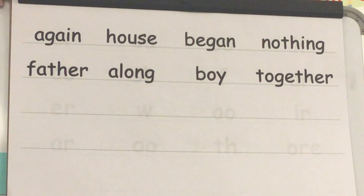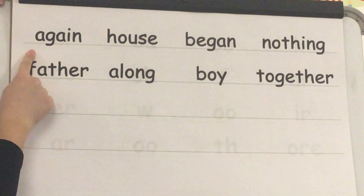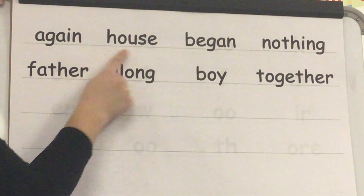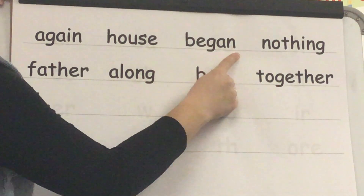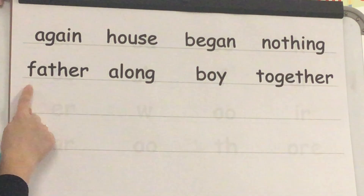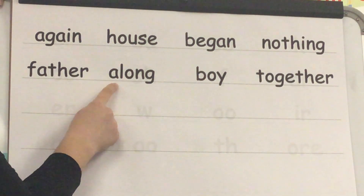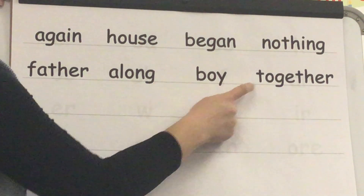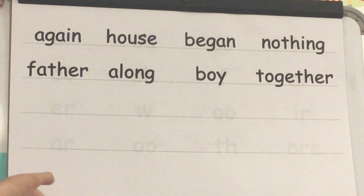Let's read our words one more time. Word: again. Word: house. Word: began. Word: nothing. Word: father. Word: along. Word: boy. Word: together. Great job!